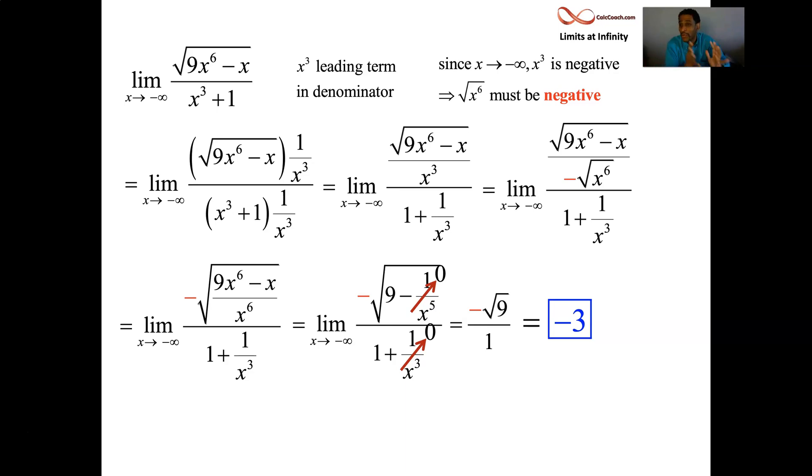This function behaves like three x cubed on top of x cubed, which is going to be a negative three. You can say that you can do that, but you can't get full credit for that. All right. I have to do all this work just to get full credit. All right. So that's one example. And then let's do another.